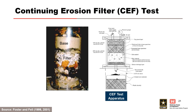Foster and Fell also developed a device to evaluate the potential for continuing erosion by modifying the no-erosion filter test. To evaluate continuing erosion, they re-ran the no-erosion filter test with a coarser filter. After the test, the water passing through the filter was collected and the eroded materials were dried and weighed to determine the loss of the base soil required to seal the filter. To ensure that continuing erosion was taking place, they also used thicker base soil specimens to allow for greater erosion losses.